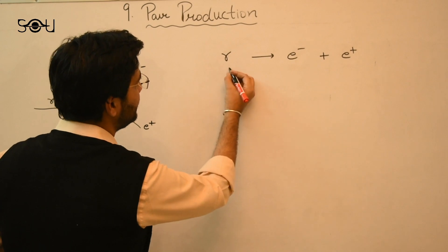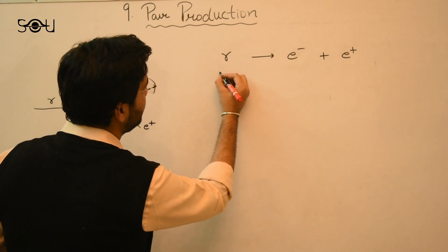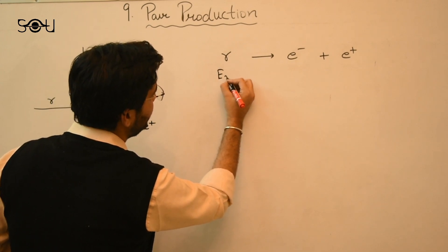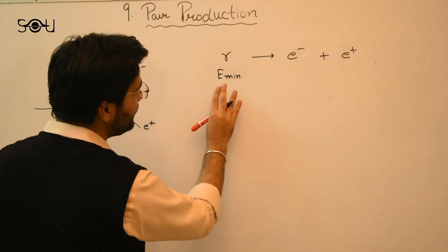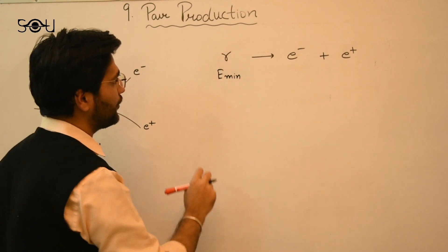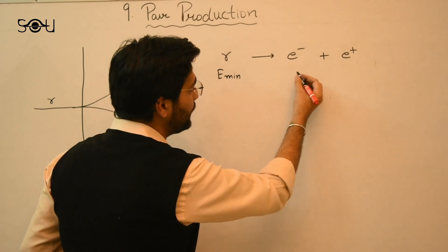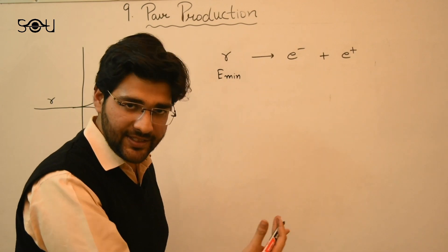So consider the energy that we are seeking, E minimum. This is the energy we want to find of the gamma ray photon. Now this will be equal to, since the kinetic energy is zero, they only have the rest mass energy mc square.